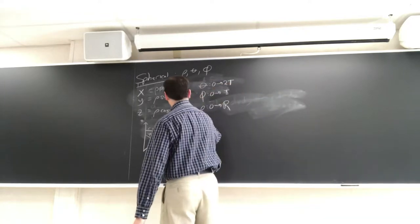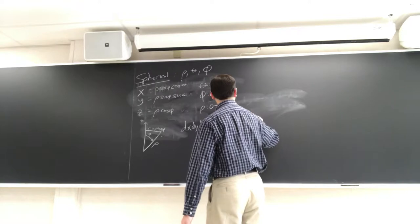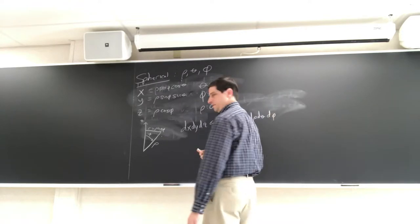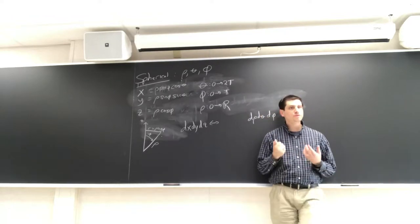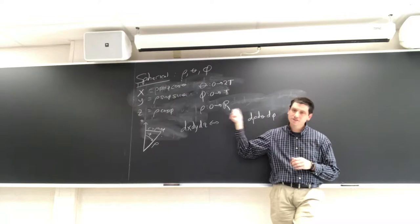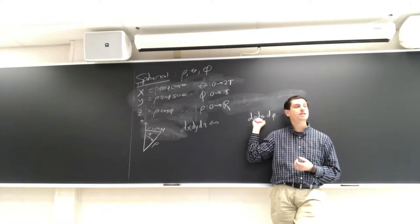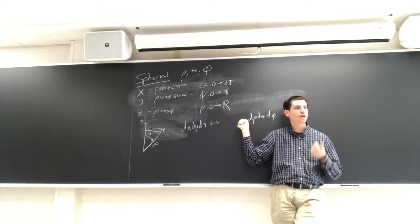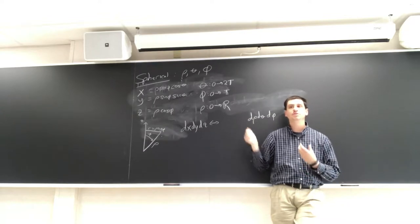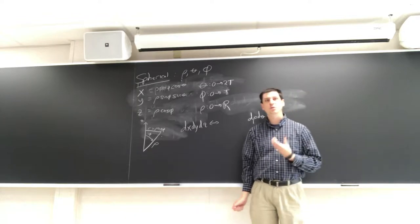We need to figure out how dx dy dz corresponds with dρ dθ dφ. Most of you, after you leave Williams, will never do a triple integral in spherical coordinates again. So the mechanics are not the most important thing. What's important is: can you look at this and give some idea of how the change is going to depend on ρ, θ, and φ? One of the three variables has a dependence that's much easier to figure out than the others. Which variable do you think is the easier one?